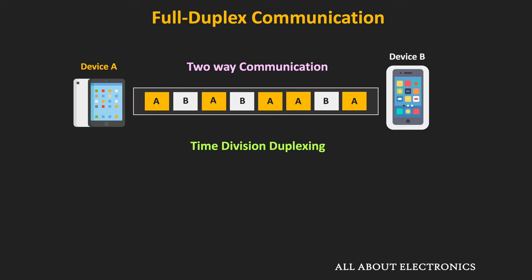In time division duplexing, if device A wants to transmit more data, it is possible to allocate more transmission slots in that direction. Similarly, when device B has more data to share, more transmission slots can be allocated in the reverse direction. This means that in time division duplexing, if traffic is asymmetric in both directions, it is dynamically possible to increase the transmission capacity in one direction.